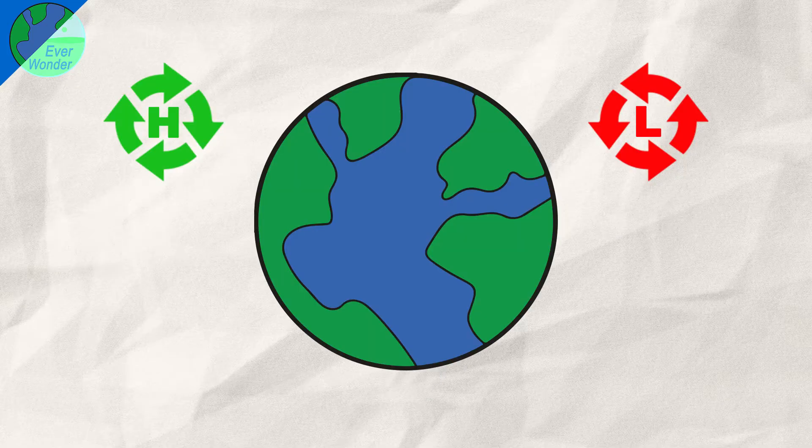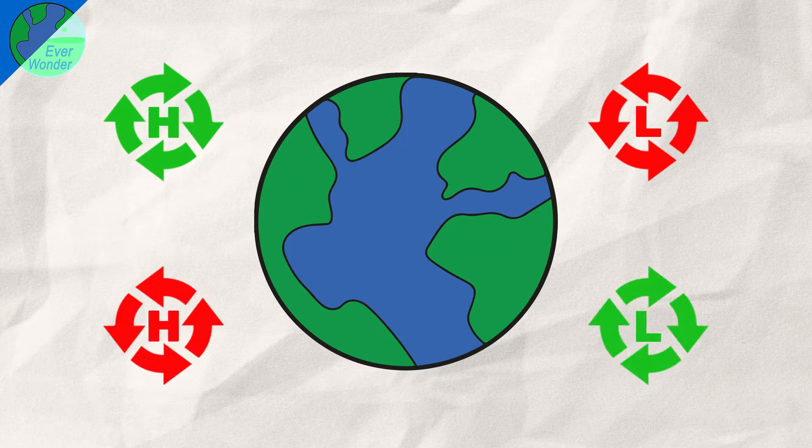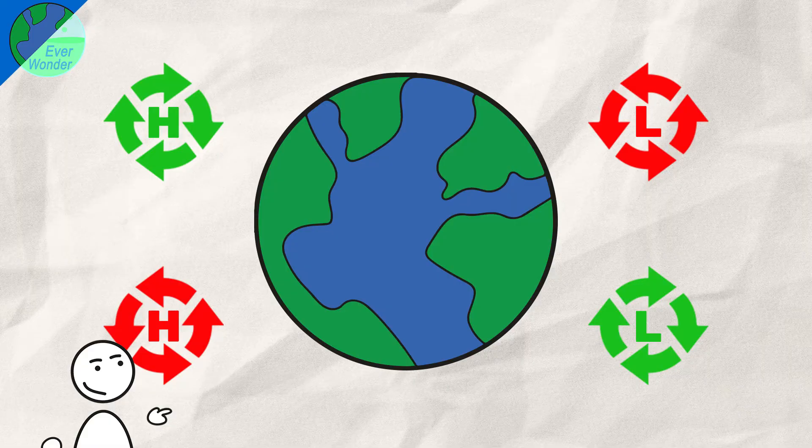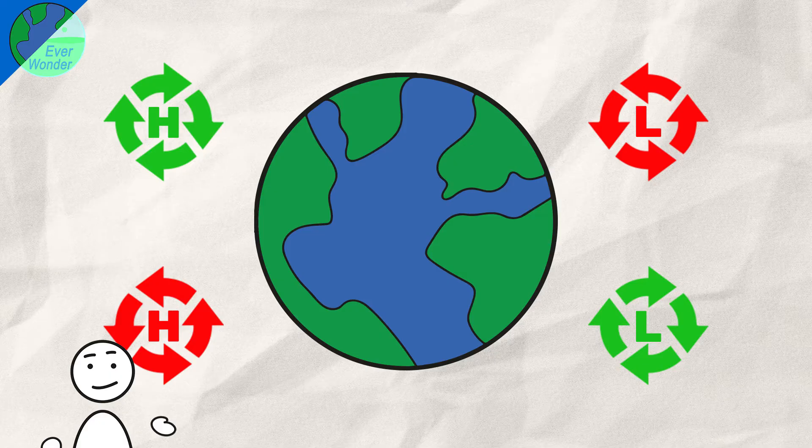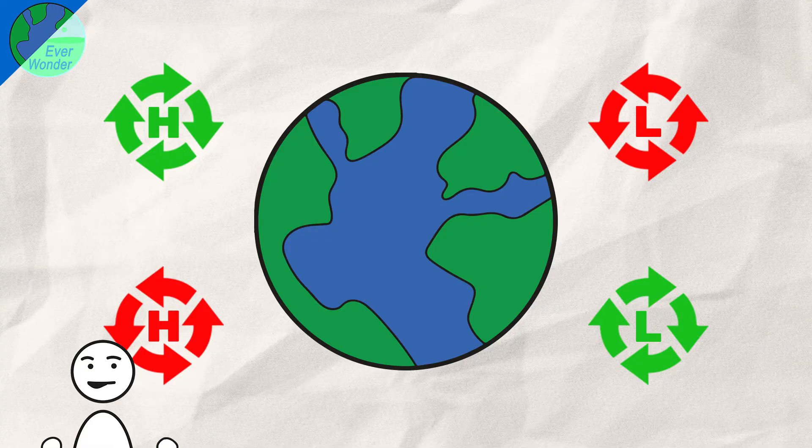Especially since high pressure areas rotate clockwise in the northern hemisphere and counterclockwise in the southern. Yes, this is not an error in the script. In the northern hemisphere, low pressure areas rotate counterclockwise, while high pressure areas rotate clockwise. And both do this because of the Coriolis effect.